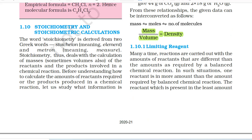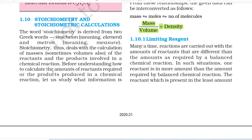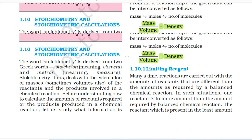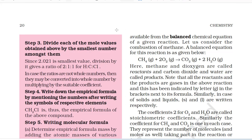1.10 Stoichiometry and Stoichiometric Calculations. The word stoichiometry is derived from two Greek words: stoicheion meaning element and metron meaning measure. Stoichiometry deals with the calculation of masses, sometimes volumes also, of the reactants and the products involved in a chemical reaction. Let us consider the combustion of methane. A balanced equation for this reaction is: CH₄ + 2O₂ → CO₂ + 2H₂O. Here methane and dioxygen are called reactants and carbon dioxide and water are called products. Note that all the reactants and products are gaseous in this reaction (indicated by 'g' in brackets next to its formula). Similarly, in case of solids and liquids, 's' and 'l' are written respectively.